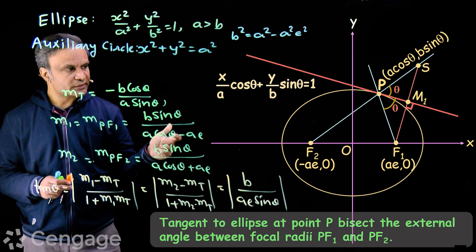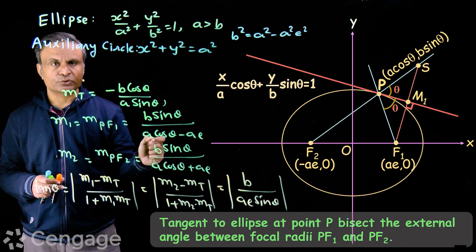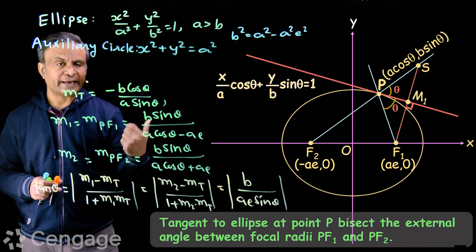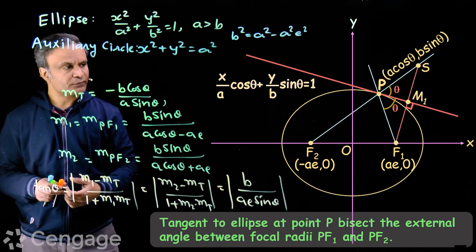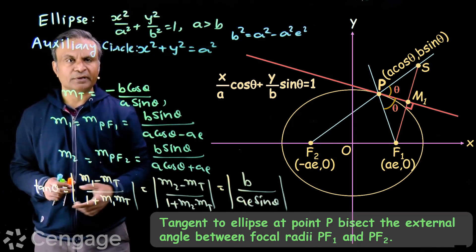If we keep the light source on F1, then the light rays emit. Those rays will reflect on the surface of the ellipse, and the light rays will pass from F2.